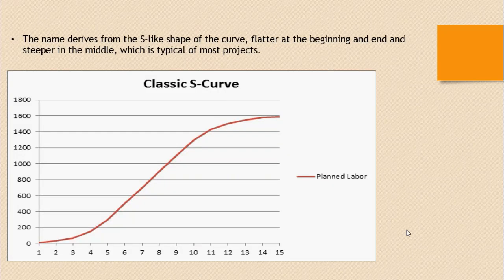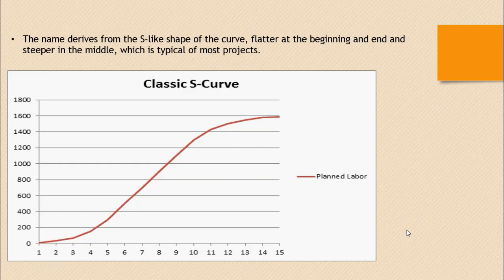The name S-Curve derives from its shape: it is steeper at the middle, flatter at the end, and flatter at the beginning. Flat at the end represents the project decelerating towards its end. Flat at the beginning represents the project starting and accelerating towards the steeper middle, meaning the project is ramping up towards the end as per the plan.